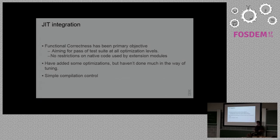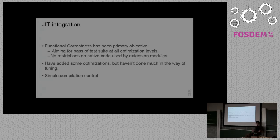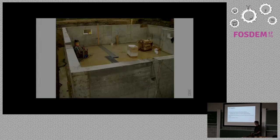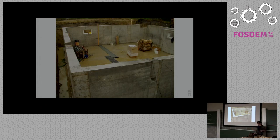Just a heads up for any of you who go and benchmark this right now: we're slower than we were in our preview. This is because I've turned off some optimizations that were hard to justify — they were a little too specific to math-type things that show up in benchmarks, which isn't a real workload. For the JIT, the goal has really been functional correctness right now. We want to pass the whole test suite at all optimization levels. We don't put any restrictions on native code. What I've built is a foundation.